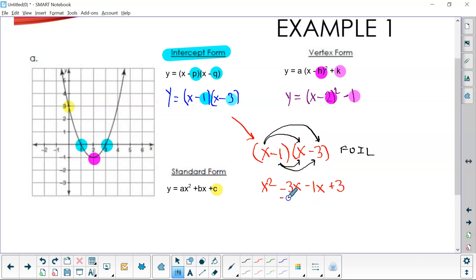Now, I just combine these like terms because they both have just an x with them. So I can rewrite this as x² - 4x + 3. And this is y equals. So this is our standard form, ax² + bx + c. And we can see that our three, our positive three, does in fact match our graph.